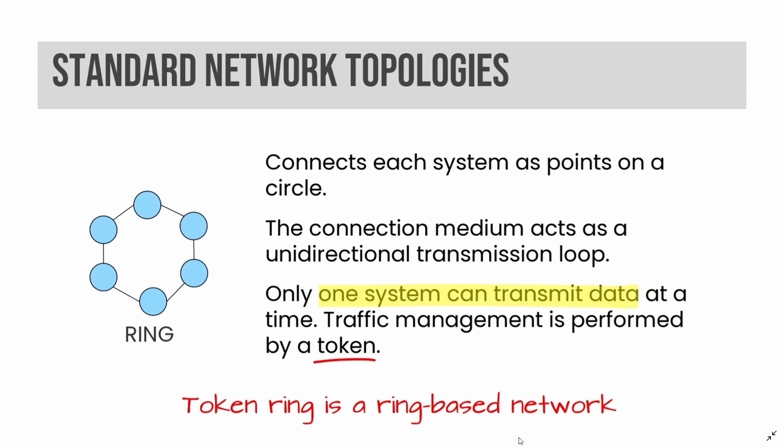A ring network topology connects each system as points on a circle. The connection medium acts as a unidirectional transmission loop. Only one system can transmit data at a time, and traffic management is performed by a token.